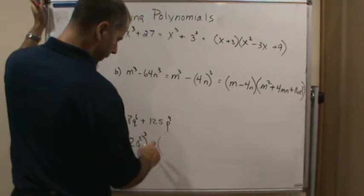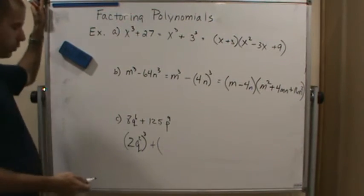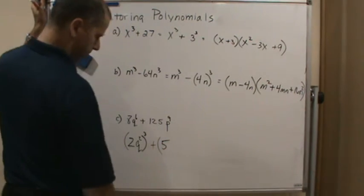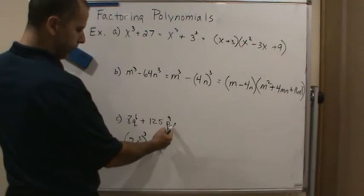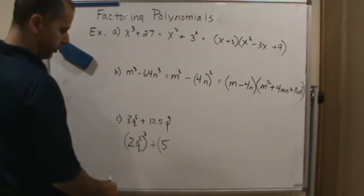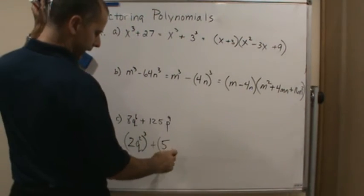And here, what cubed equals 125? That's 5. And how can we rewrite this as a power to a third power? Well, that would be p to the 3.